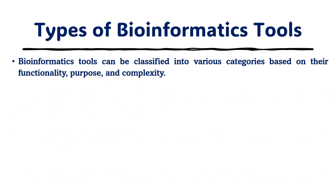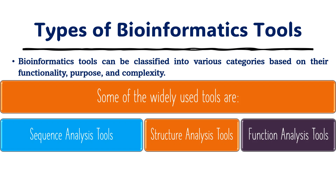Bioinformatics tools can be classified into various categories based on their functionality, purpose, and complexity. There are three specific types: sequence analysis tools, structural analysis tools, and functional analysis tools. Sequence analysis tools are used to analyze nucleotide or protein sequences, identify homologous sequences, and understand evolutionary relationships between different organisms. They include tools for sequence alignment, sequence database searching, motif discovery, and phylogeny.